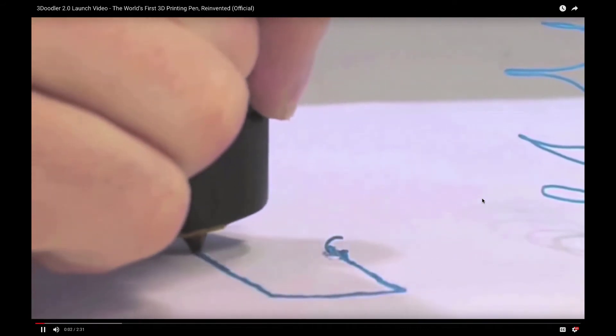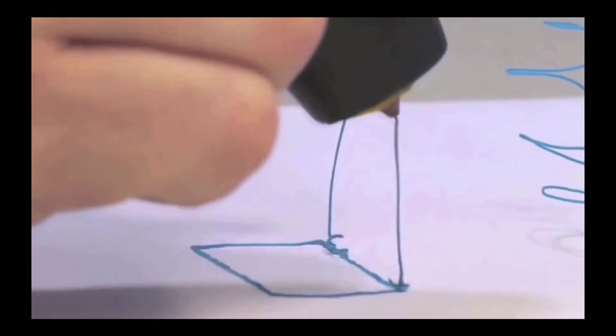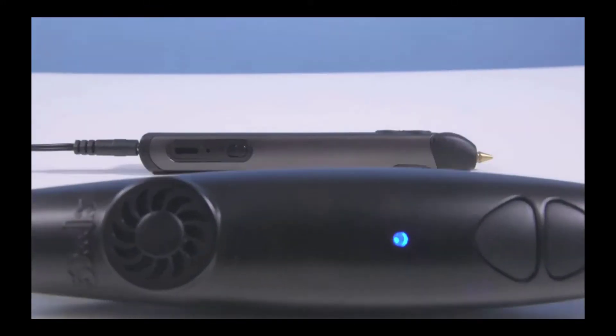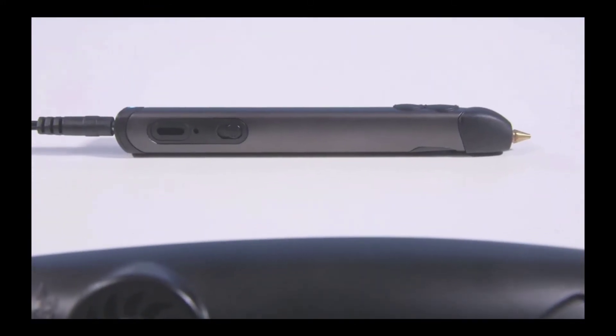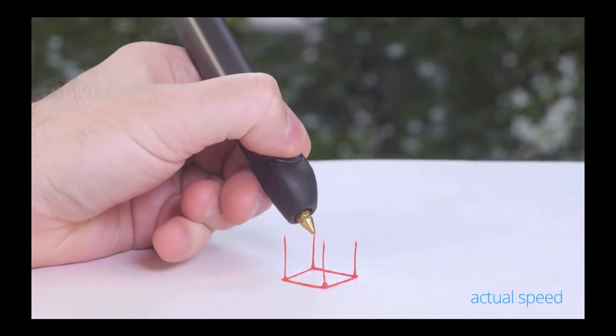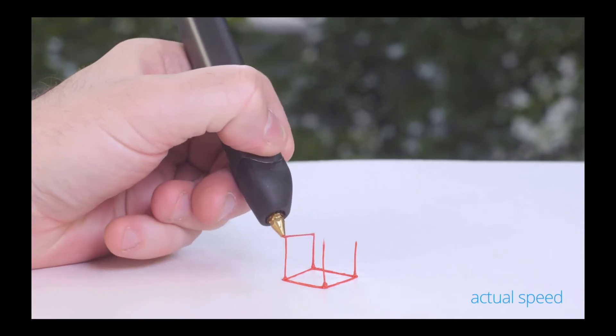When we first launched the 3Doodler, we asked the world to imagine a pen that could literally draw in the air. Two years on, we've made the world's first 3D printing pen even better with a new and improved version that's slimmer, lighter, quieter, and even easier to use.